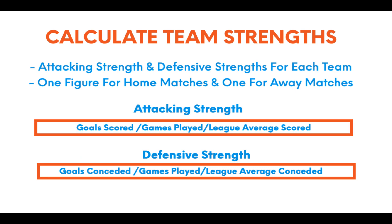First, we need to calculate each team's strengths for every single team in the league. For the Premier League in 2021, we need the attacking strength and defensive strength for each team, separately for home and away. So we'll have one figure for home matches and one for away matches. Using Arsenal as an example — purely because it's alphabetical order — we'll have Arsenal's home attacking strength, home defensive strength, away attacking strength, and away defensive strength.